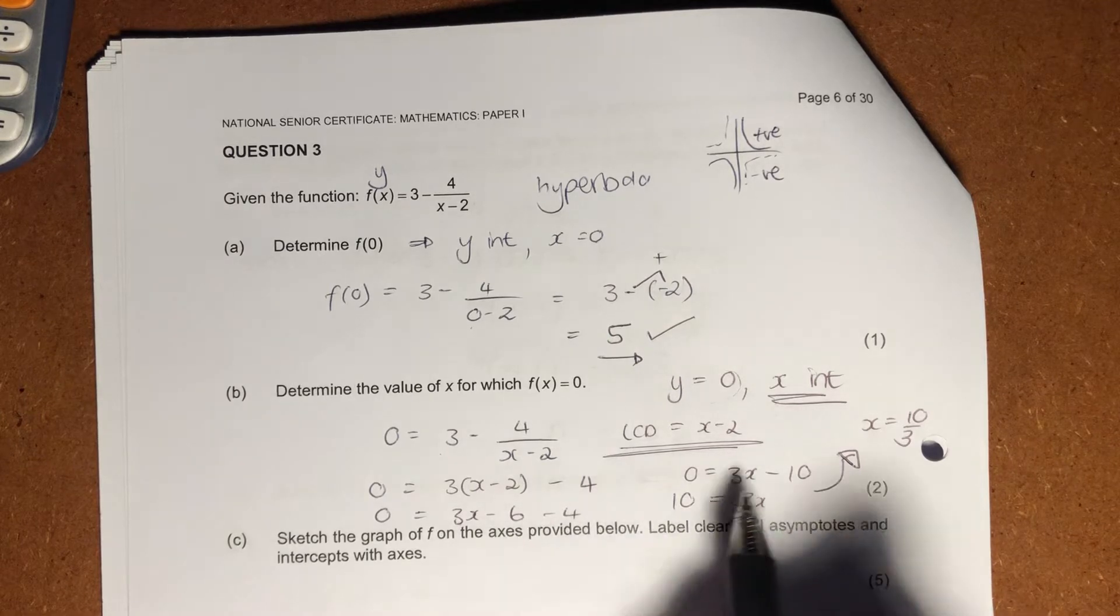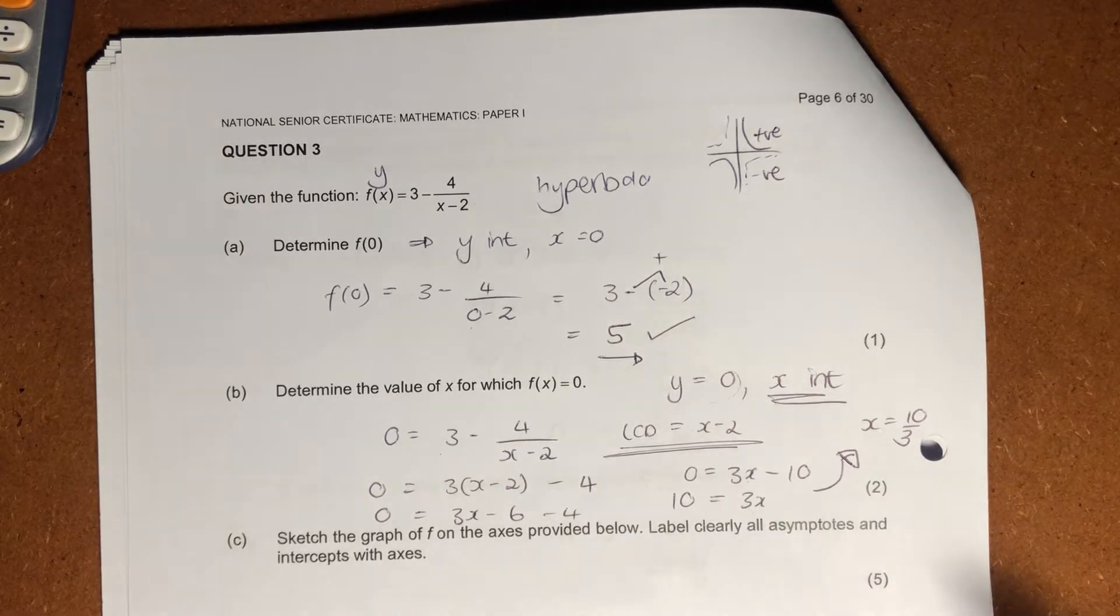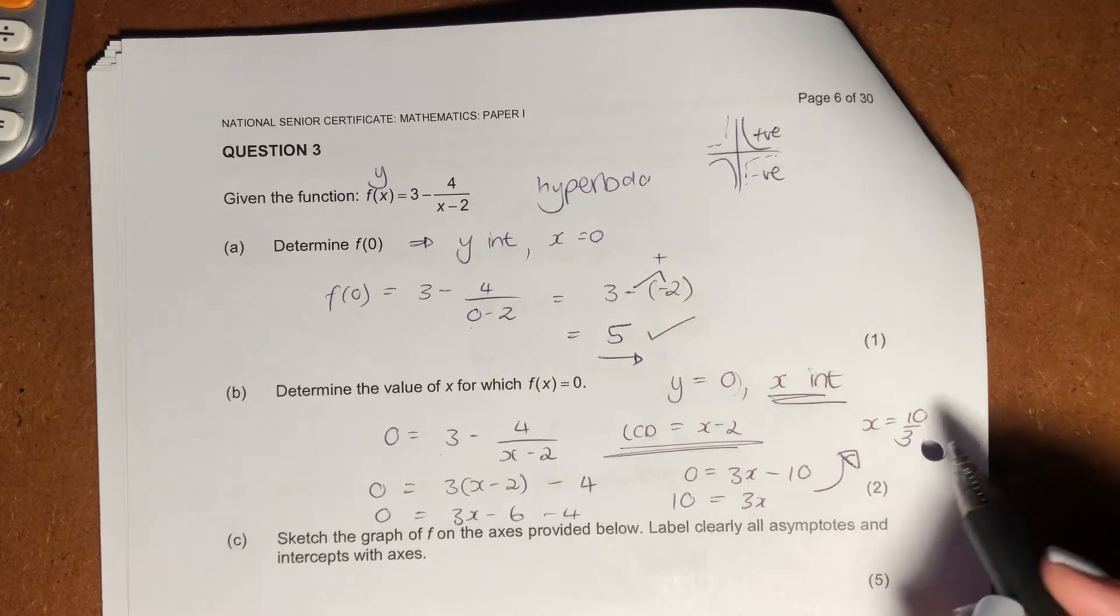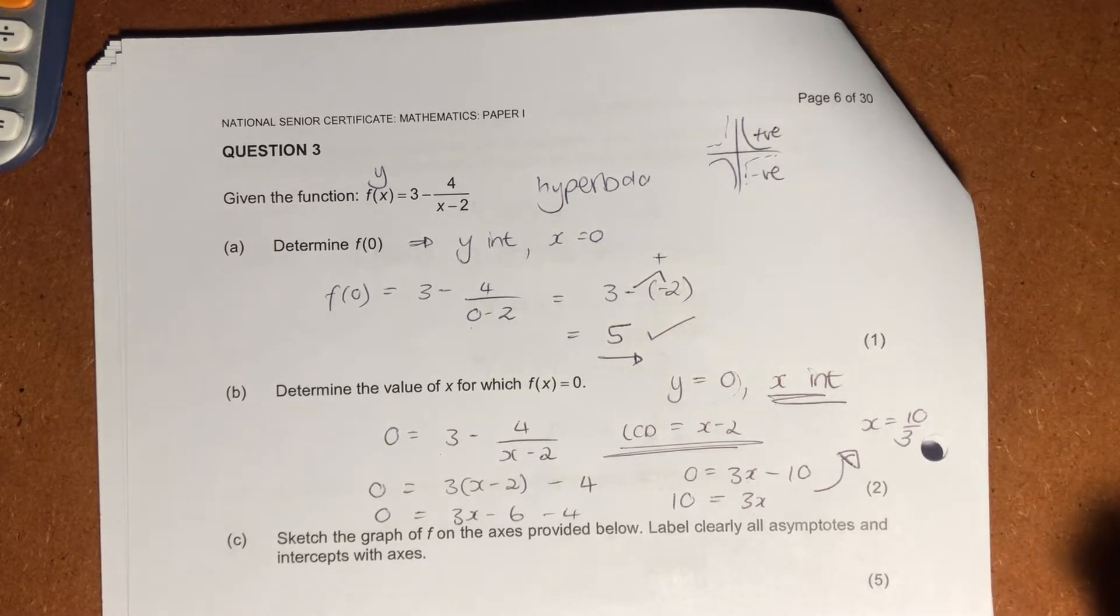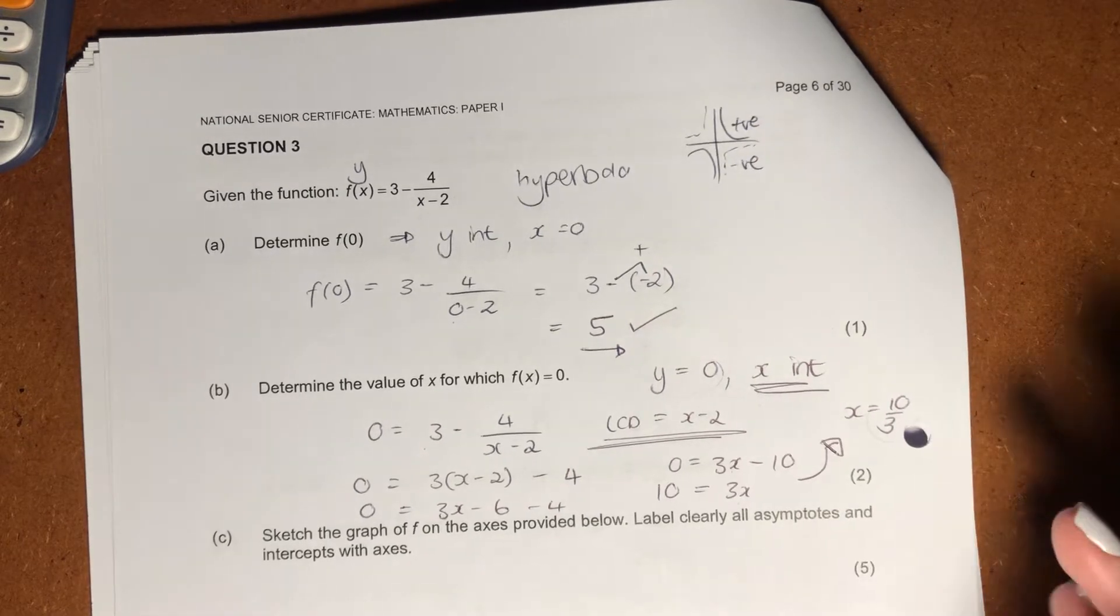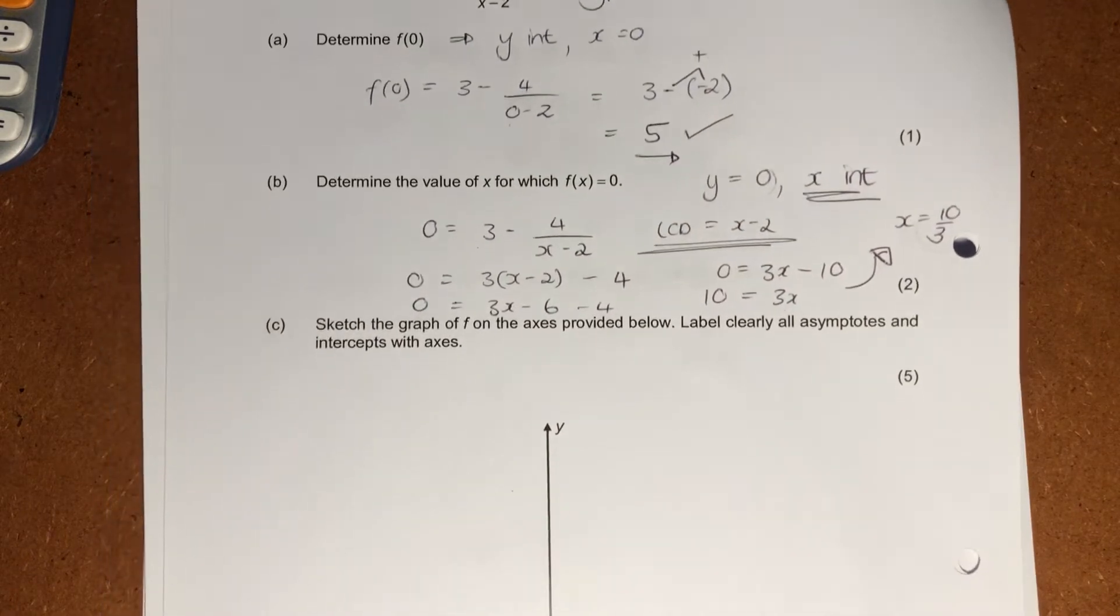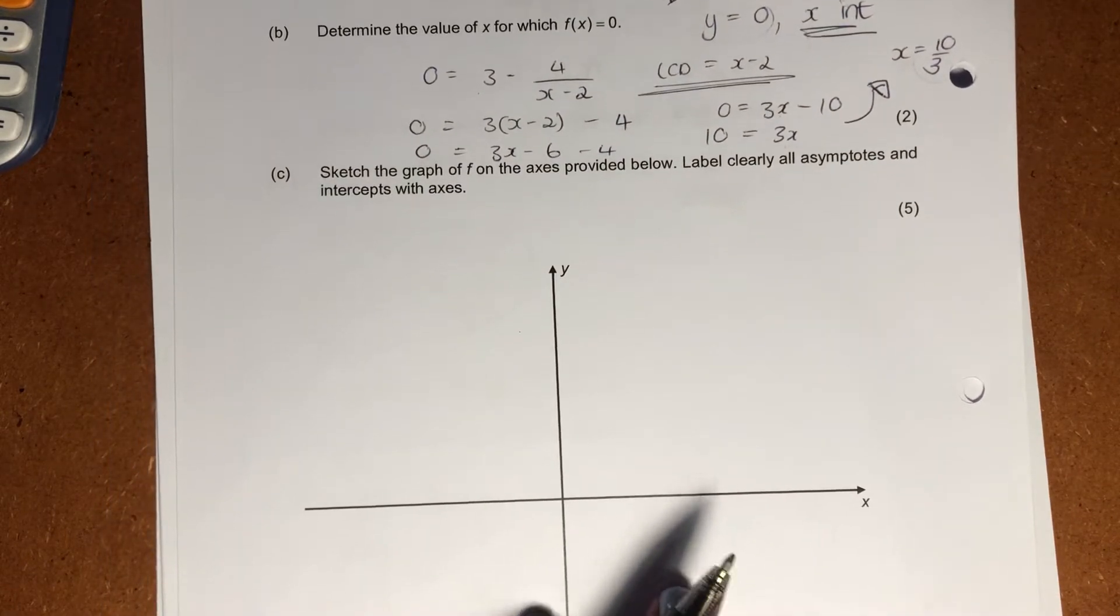Do some basic algebra. I've written the steps there for you, and your answer is x equals 10 over 3. You can write that as x equals 3 and a third if you want. I prefer improper fractions, but that's sort of up to you. Now that we've found these intercepts, which is really helpful, because look at the next question.